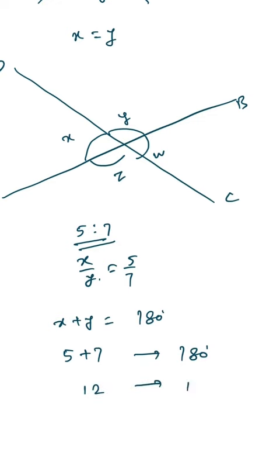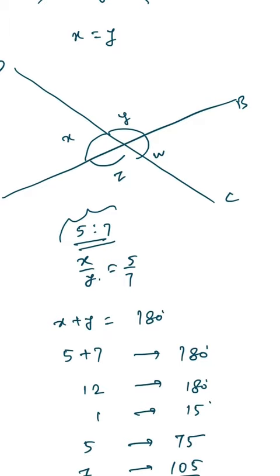Since x and y are in ratio of 5 is to 7, then 5 plus 7 will be equivalent to 180, or 12 will be equivalent to 180, or 1 will be equivalent to 15, and 5 will be equivalent to 75. The other angle equivalent to 7 is 105 degrees.